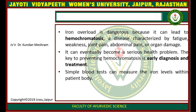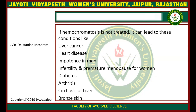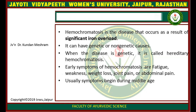The key to preventing hemochromatosis is early diagnosis and treatment. Simple blood tests can measure iron levels within the patient's body. If hemochromatosis is not treated, it can lead to liver cancer, heart disease, impotence in men, infertility and premature menopause in women, diabetes, arthritis, and cirrhosis of the liver and bones. Hemochromatosis results from significant iron overload and can have genetic or non-genetic causes. When the disease is genetic, it is called hereditary hemochromatosis. Early symptoms include fatigue, weakness, weight loss, joint pain, or abdominal pain, usually beginning during middle age.